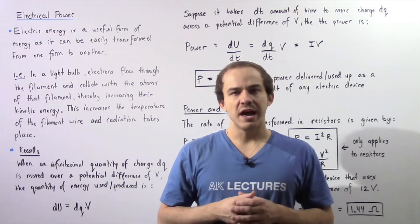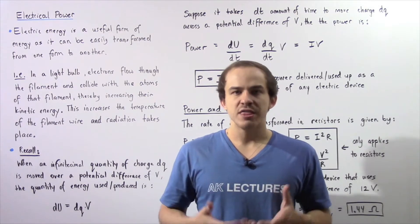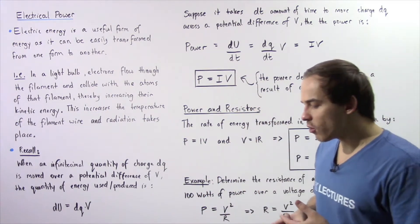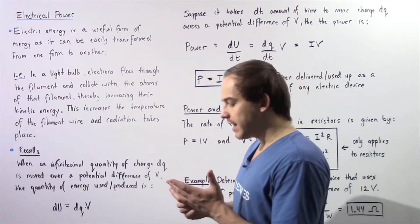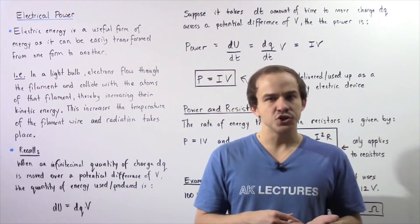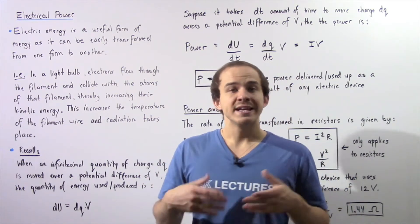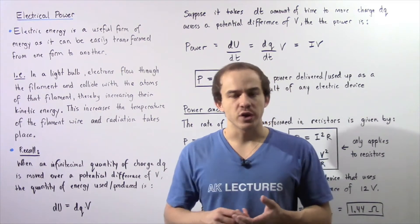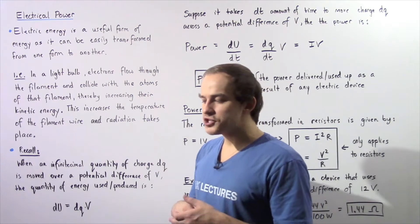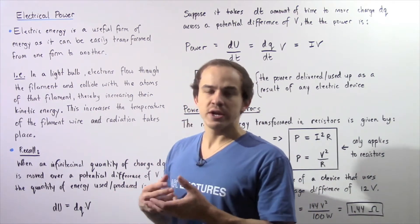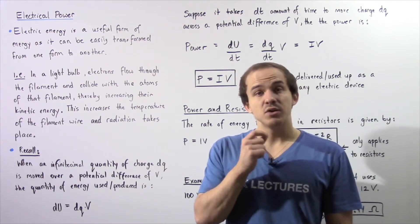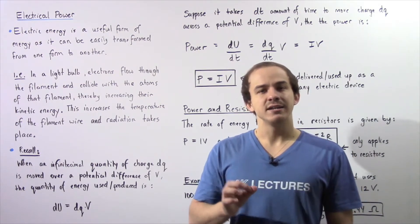One of the most useful forms of energy is electric energy, because electric energy can be readily and easily transformed into other forms of energy. For example, electric energy is commonly transformed into mechanical energy, or in a car it's transformed into thermal energy as well as radiation. Let's examine one very common example in which electric energy is transformed into thermal energy as well as radiation — what takes place inside a light bulb.